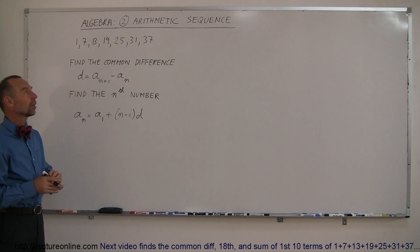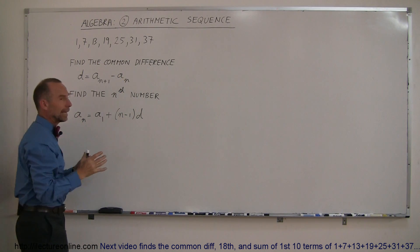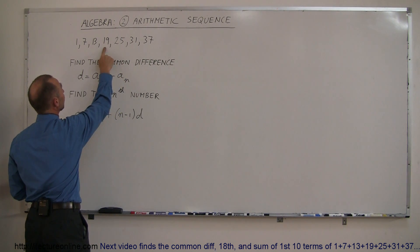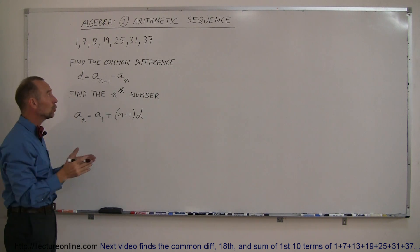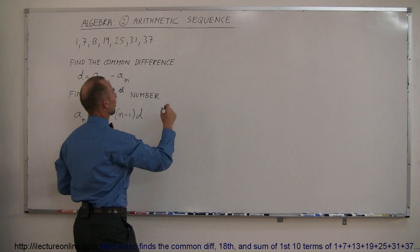A very special set of numbers because if we subtract any one of them from the next number, we get what we call a common difference. For example, 25 minus 19 is 6, 19 minus 13 is 6, and so forth. So the difference between any two of the numbers always gives you the same common difference.